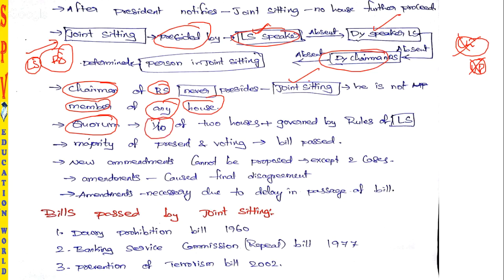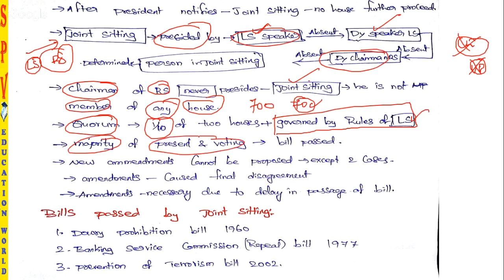To run the joint sitting, a quorum of one-tenth of the total members of the two houses is required — so a minimum of 70 members if the total is 700. The joint sitting is governed by the rules of Lok Sabha, not Rajya Sabha. The bill is passed by a simple majority of members present and voting; for example, if 500 members arrive, a majority of 251 is needed to pass the bill.